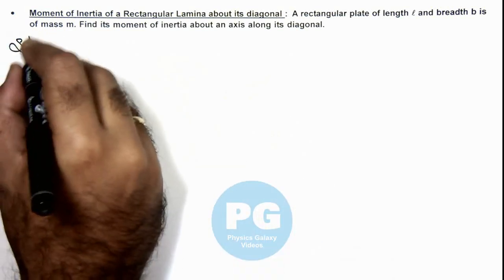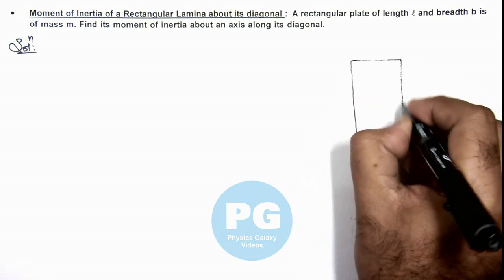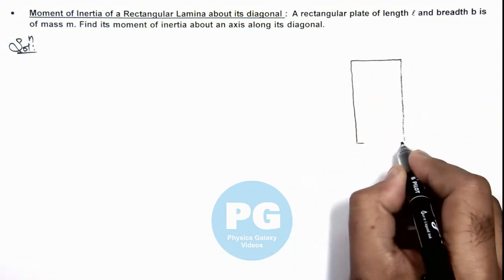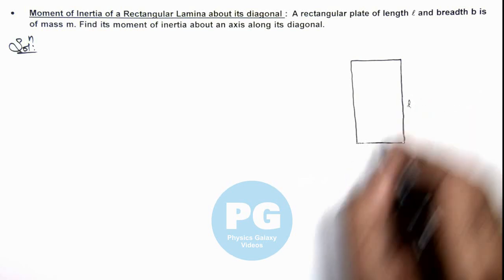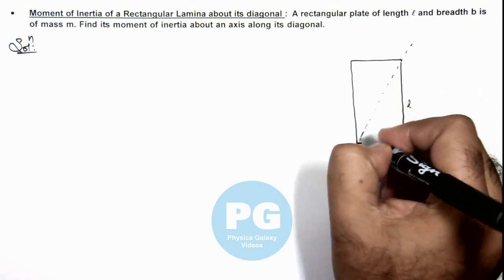Now, if we draw the figure of such a rectangular plate of which the length is l and breadth is b, about an axis which is passing through its diagonal.